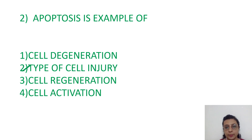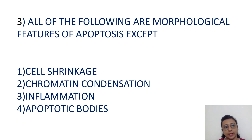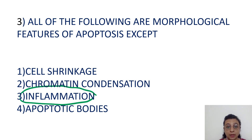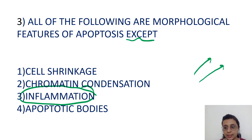All of the following are features of apoptosis except inflammation. Why? Because there is no plasma membrane damage, no cellular contents leakage, and thus no inflammatory reaction is induced.